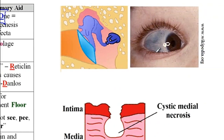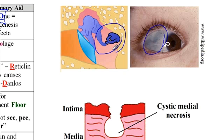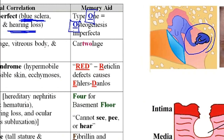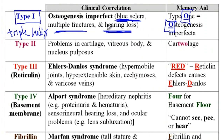Here is an example of a blue sclera, where due to the thin sclera, the choroidal veins are evident, and thus there would be blue discoloration of the sclera. There is also a problem with the middle ear bones, which includes stapedial fixation or sometimes a fracture of the stapedial bone, as a consequence of which these patients develop conductive and sometimes mixed hearing loss. The third feature is multiple bone fractures.